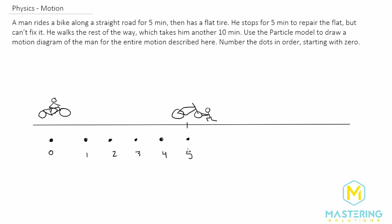Whenever he starts walking again, at the five-minute spot he's going to be staying there for five minutes. So when he finally starts to move and walks again, this is actually going to be five minutes later — from five to here, it's going to be minute eleven when he starts walking.